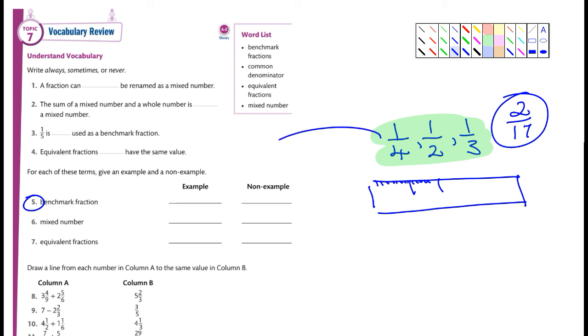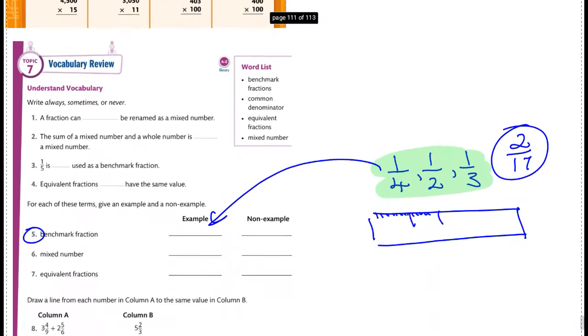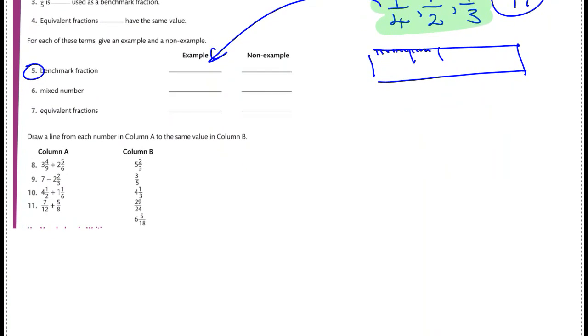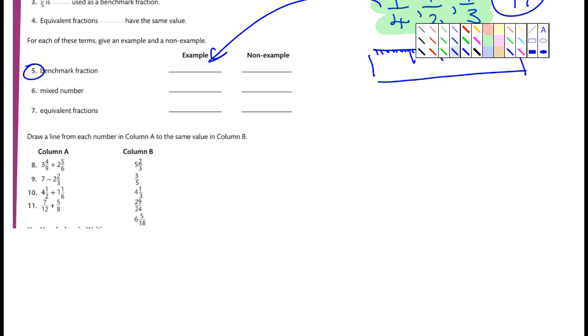So for an example, you can put any one of those or all three of them in there. In a non-example, you can kind of come up with your own or put down two seventeenths. I don't really care. And let's see here. Then for number eight, nine, ten, eleven, all you're doing is drawing a line that matches. If you think eight is 29 over 24, then you would draw a line to that. I have no idea if it is or not, but that's how you would do those.